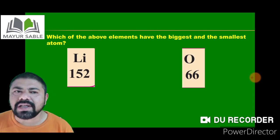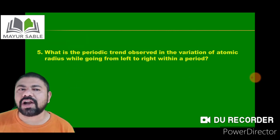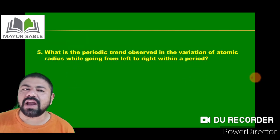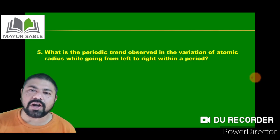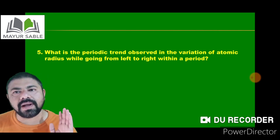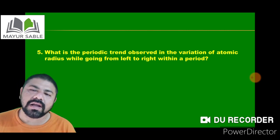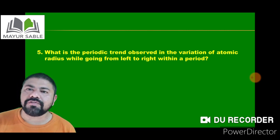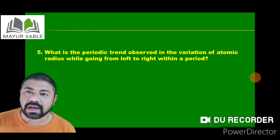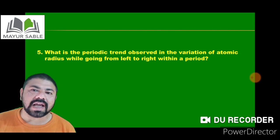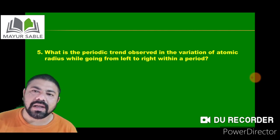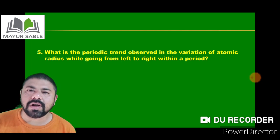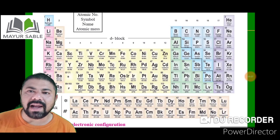The question asks: what is the periodic trend observed in atomic radius going from left to right in a period? The first element in every period possesses the greatest atomic size, and the atomic size goes on decreasing as we move from left to right in the modern periodic table. This is one important periodic trend of atomic size.